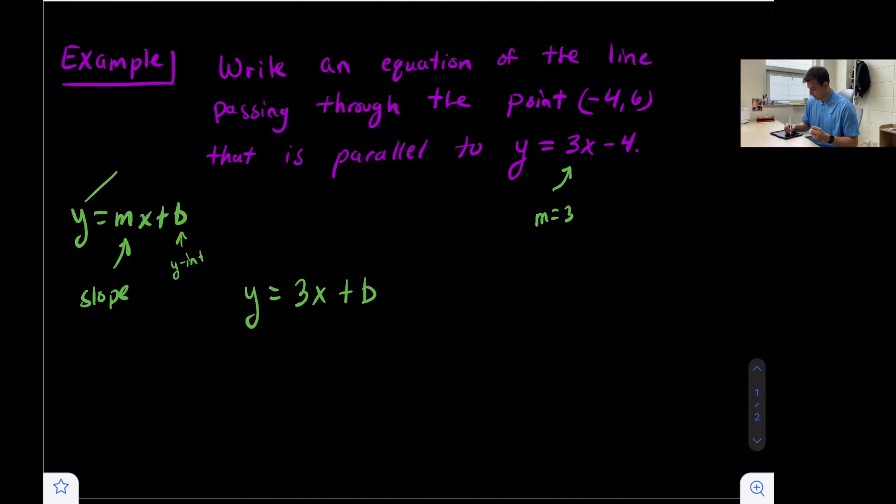In slope-intercept form, x and y represent any coordinate on our line. We have the point (-4, 6), so we can plug these values in for x and y in our equation to solve for b.